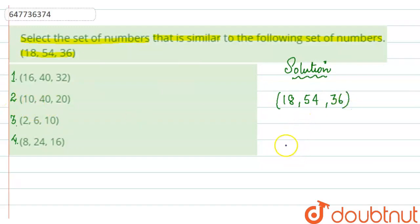What do we have to do here? Look, 18 into 3 is 54 and 18 into 2 is 36. So this way, we have similar pattern here.